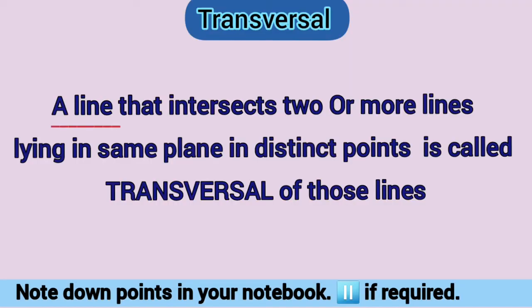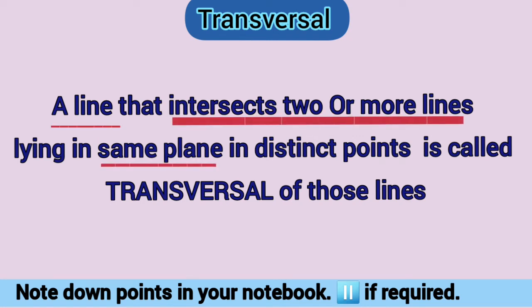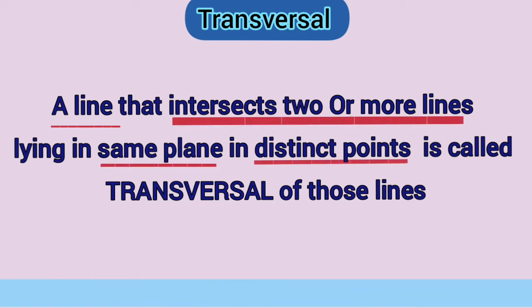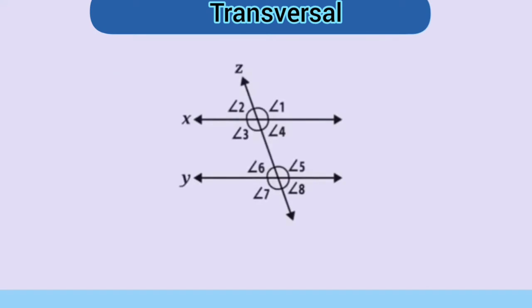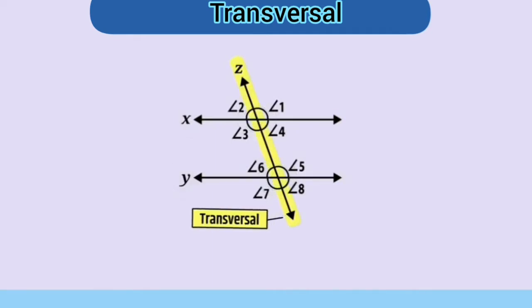A line that intersects two or more lines lying in the same plane at distinct points is called a transversal of those lines. Look at this on-screen figure. Here, line Z is intersecting line X and line Y at two distinct points — that is why line Z is a transversal.